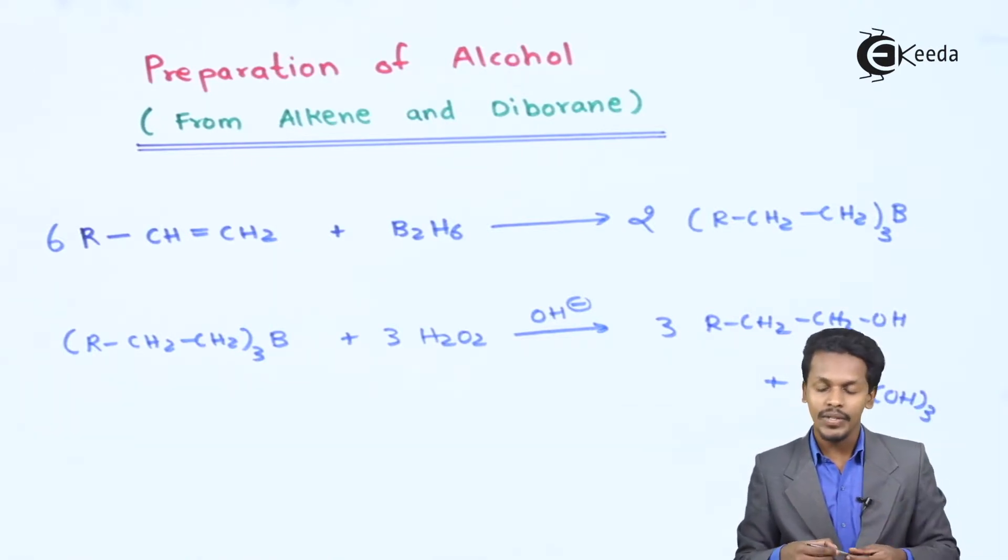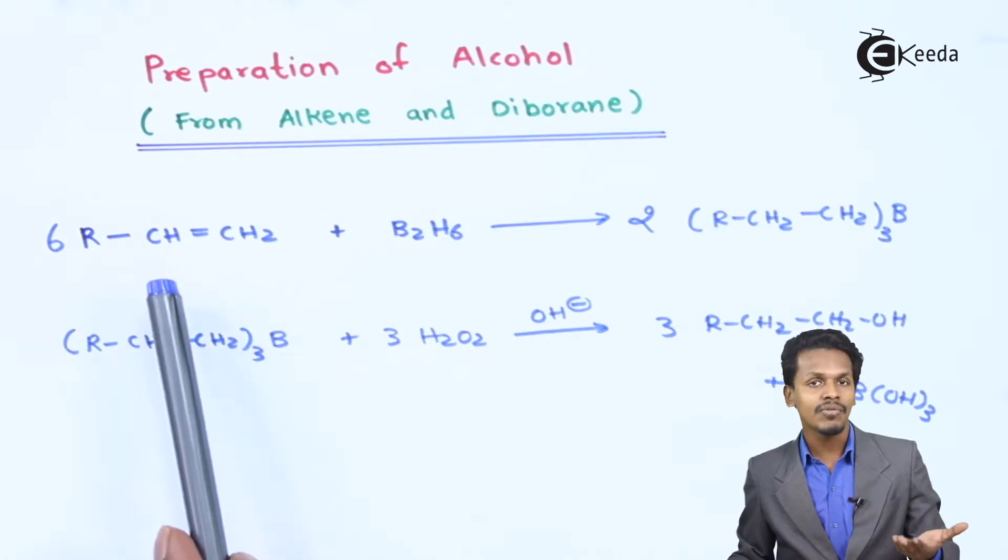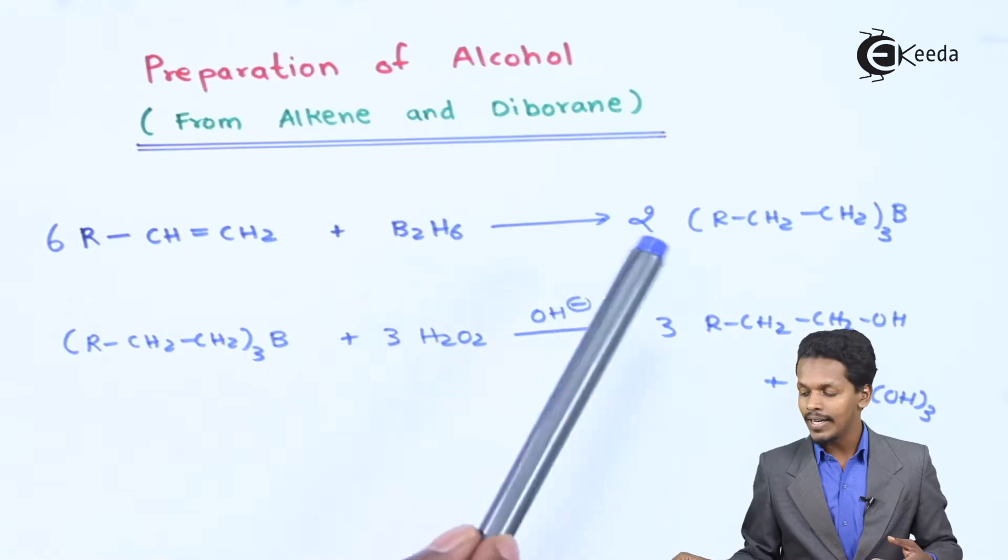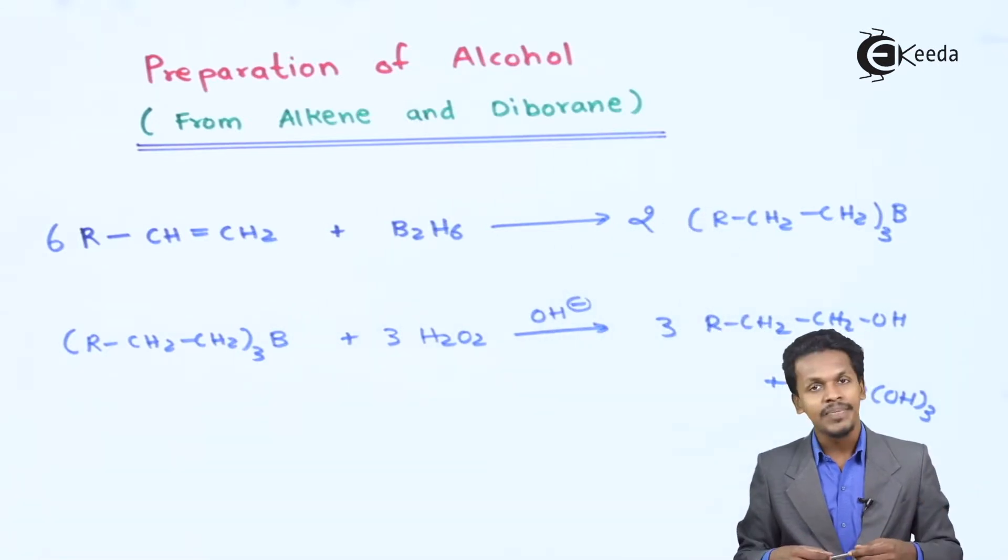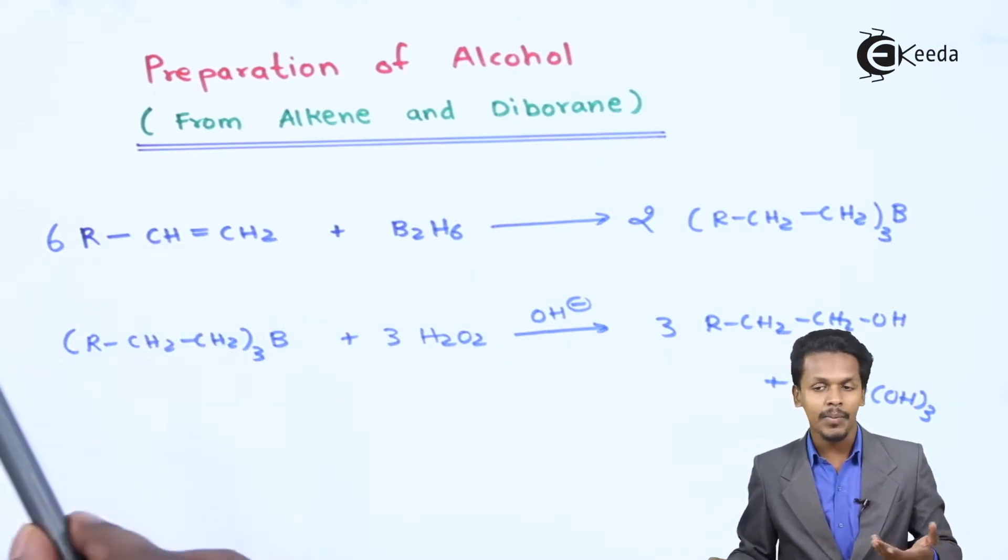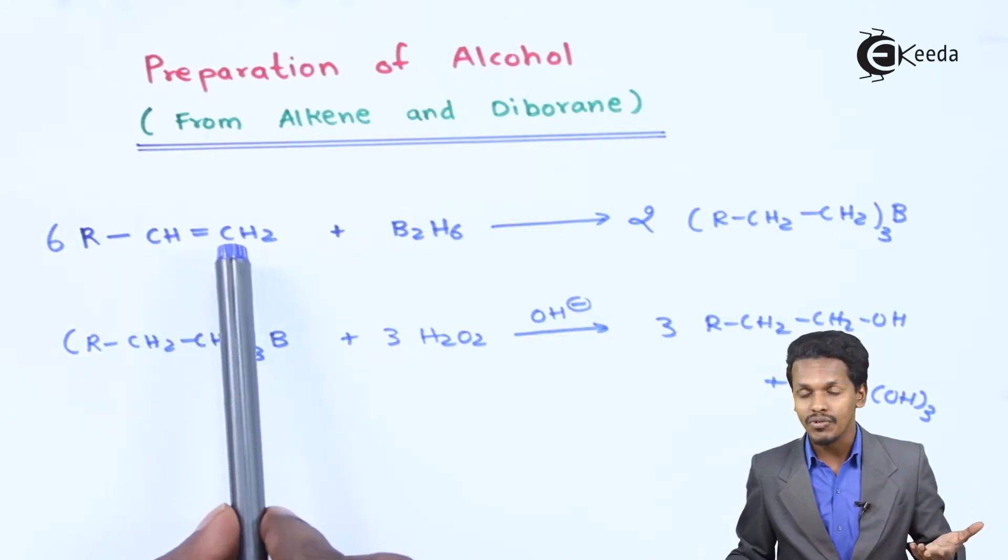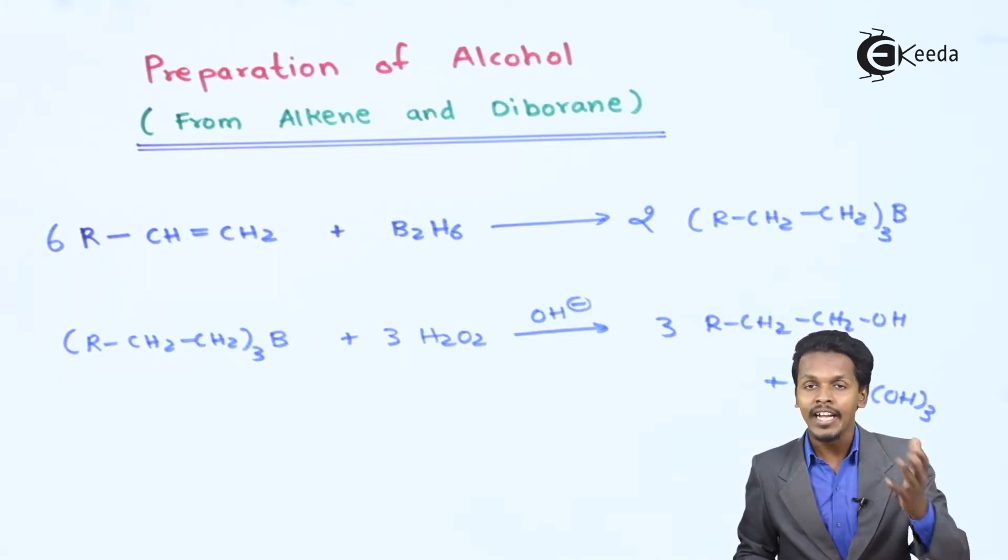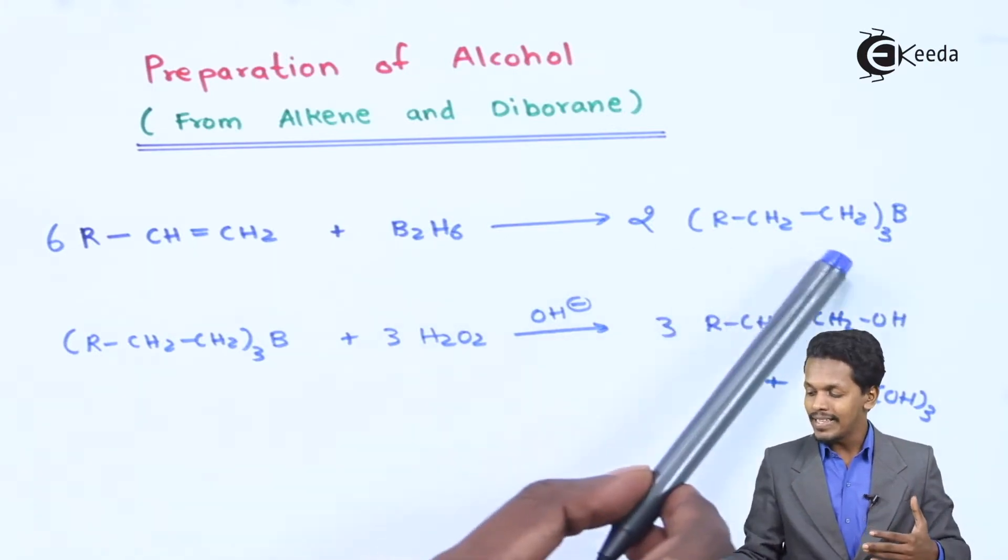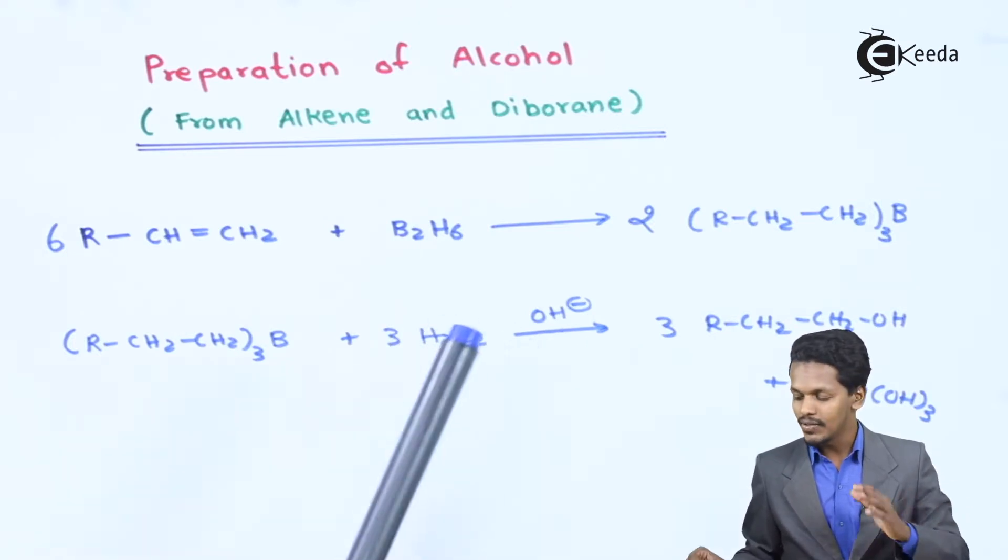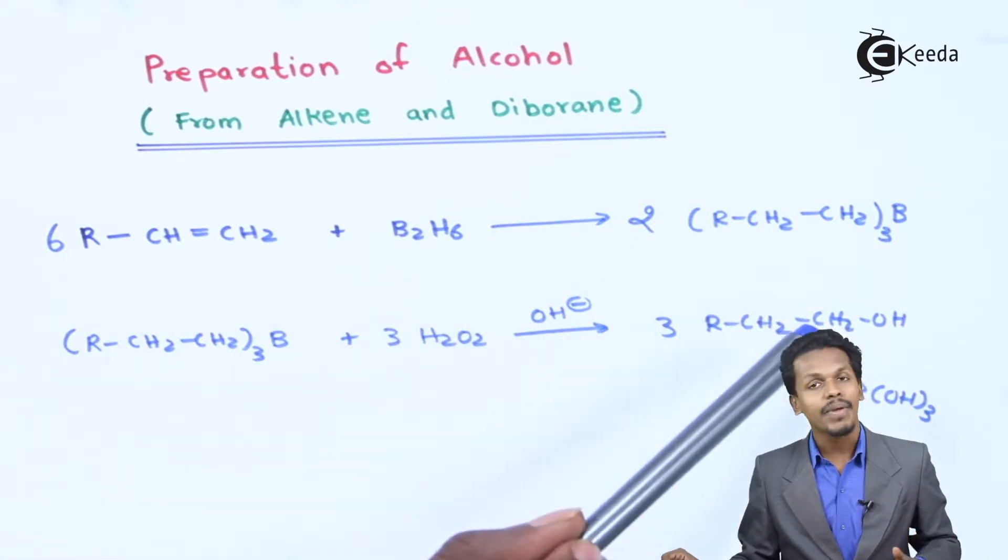But let me give you certain information for this one. Suppose if we are considering an unsaturated alkene and if we are reacting with Diborane B2H6, then the product that we could get is basically trialkyl borane. So in this case basically the boron atom will attach to the carbon atom of the carbon-carbon double bond which consists of more number of hydrogen atoms. And now this is how basically it gives us a glimpse of anti-Markovnikov's rule. So by this basically whenever we treat it with hydrogen peroxide in the presence of strong base, in that case basically we could get a primary alcohol.